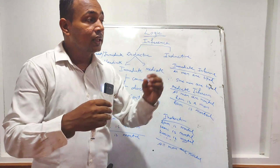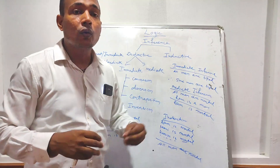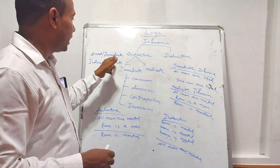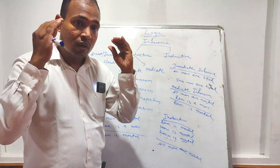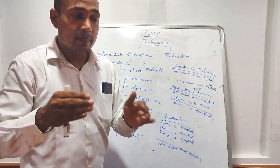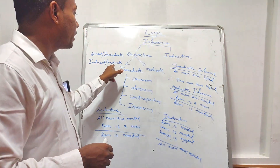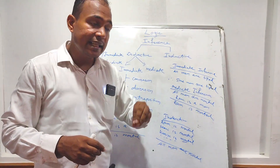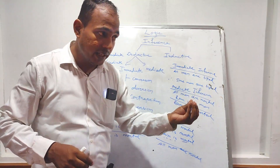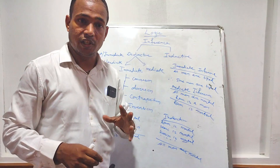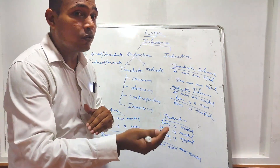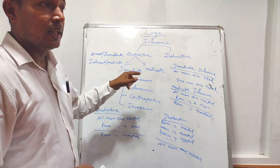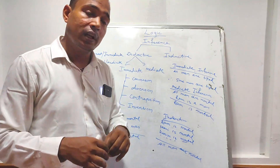Indirect knowledge is the knowledge which comes to mind with the help of any via media. For example: seeing smoke on the hill — I think there is fire. To know about the fire, I depend on smoke. That is indirect knowledge.